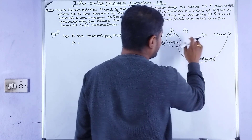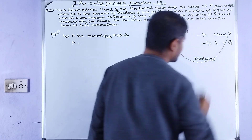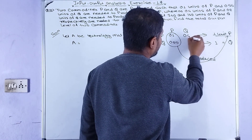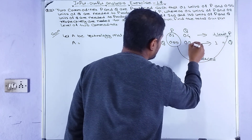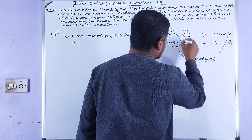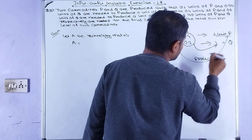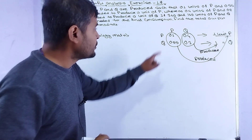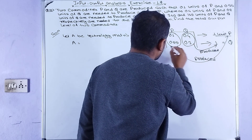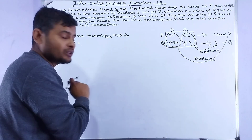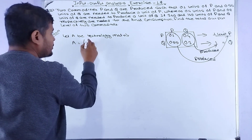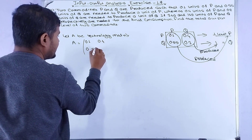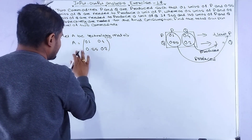To produce one unit of Q, 0.4 units of P is the input and 0.2 units of Q is the input. So the technology matrix A is: [0.1, 0.4; 0.55, 0.2].